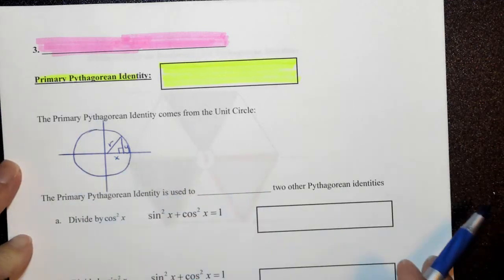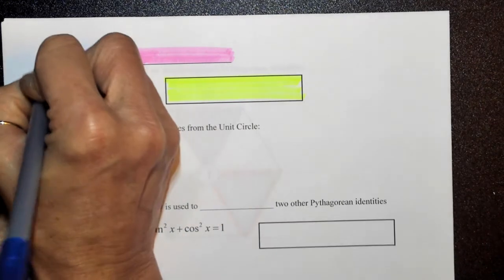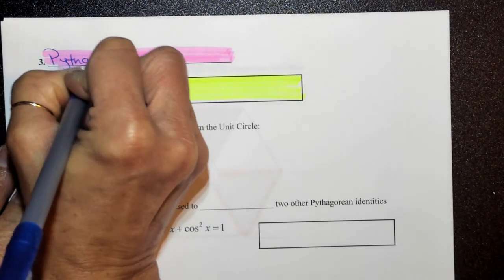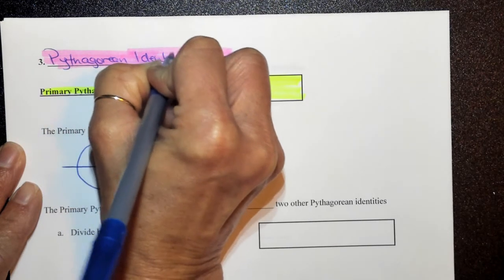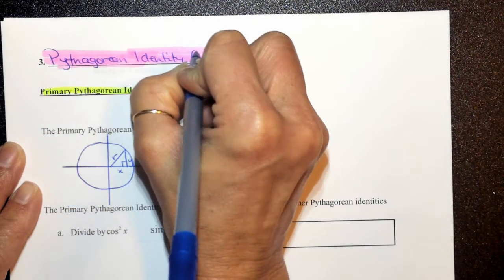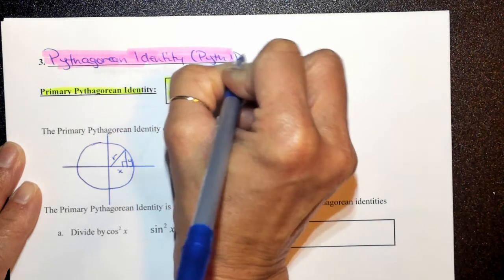Okay, the third category that we dealt with was the Pythagorean identity, and we're going to write this as Pythid for short.